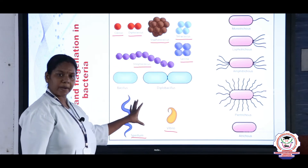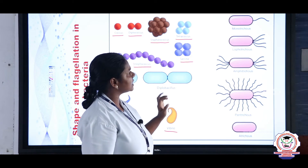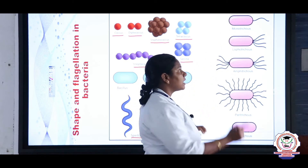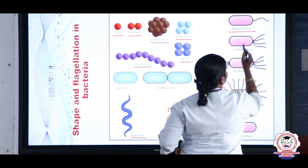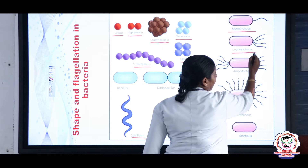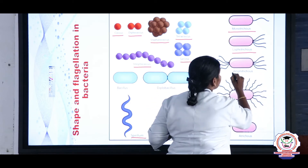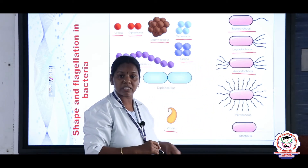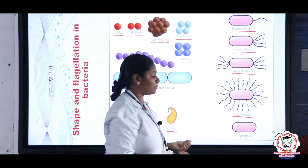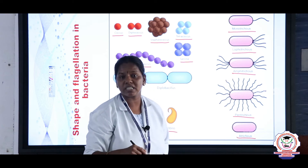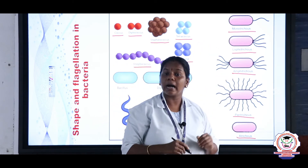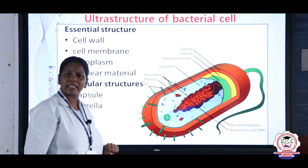Flagella are outgrowths outside the bacteria that help in movement. Based on flagella: if only one flagellum is present it is monotrichus; a bunch on one side is lophotrichus; bunches on both sides is amphitrichus; flagella throughout the outer surface is peritrichus; and no flagellum is atrichus — 'a' meaning absent.